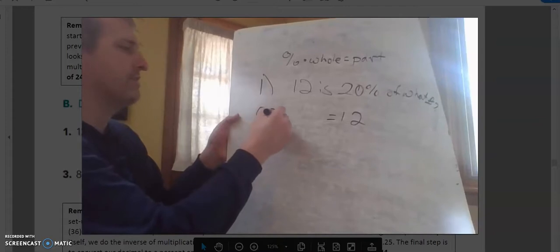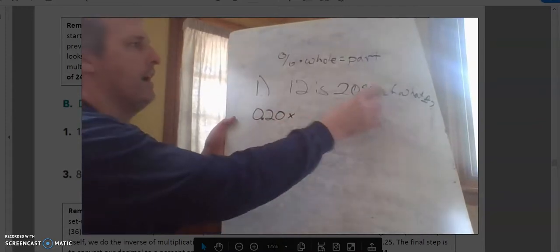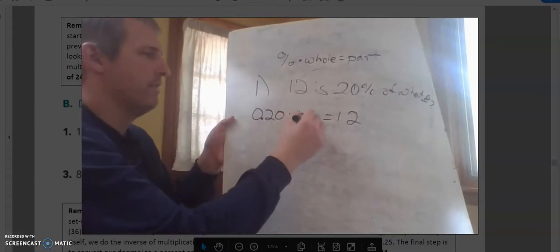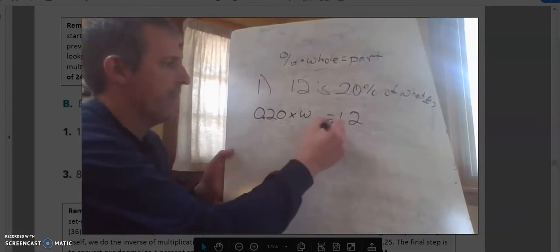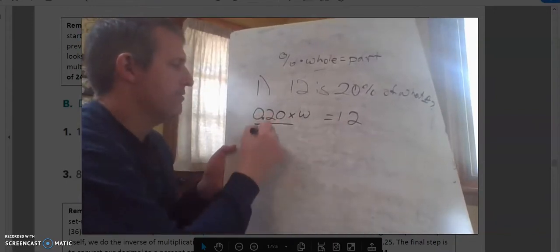And we've got our percent right here. So we're going to change that to 0.20, and then I'm going to multiply that by my whole, which I don't know. So I'm going to put a W there for whole. So what I need to do is divide both sides by the 0.20.